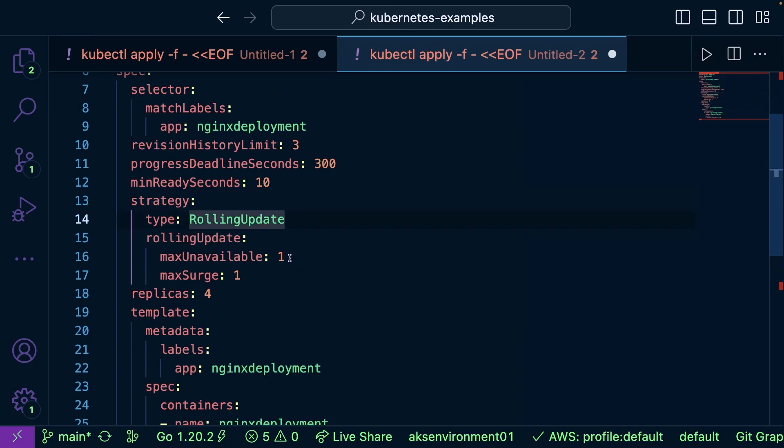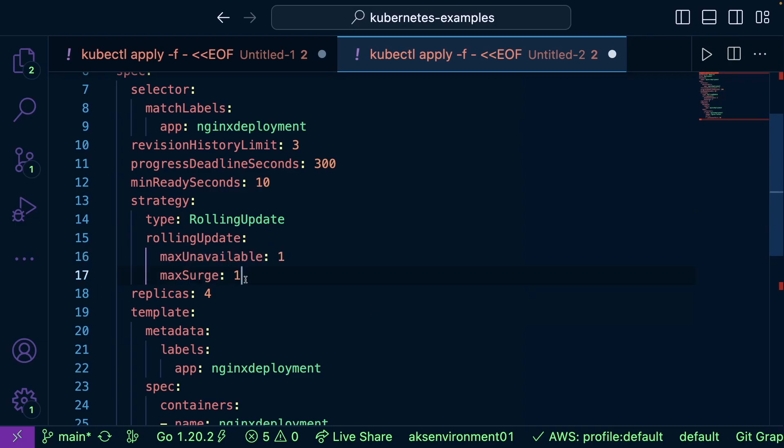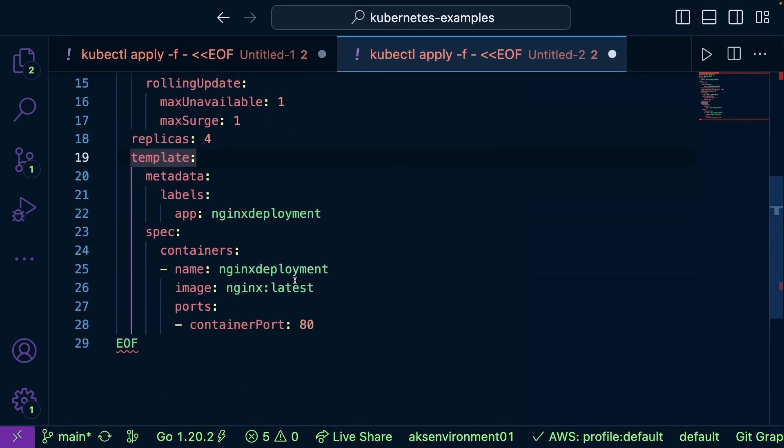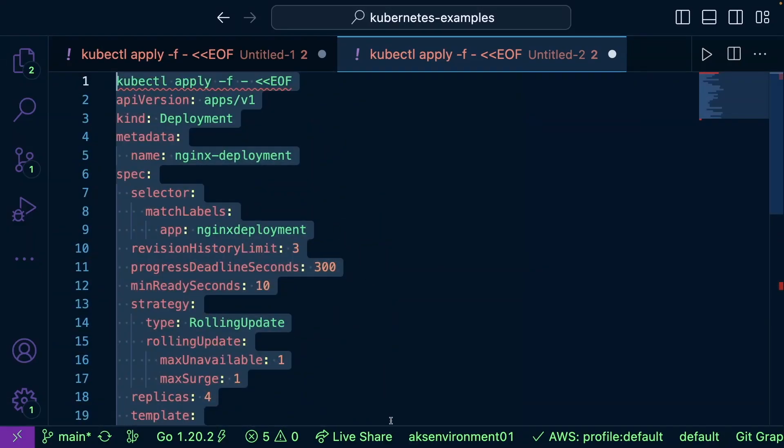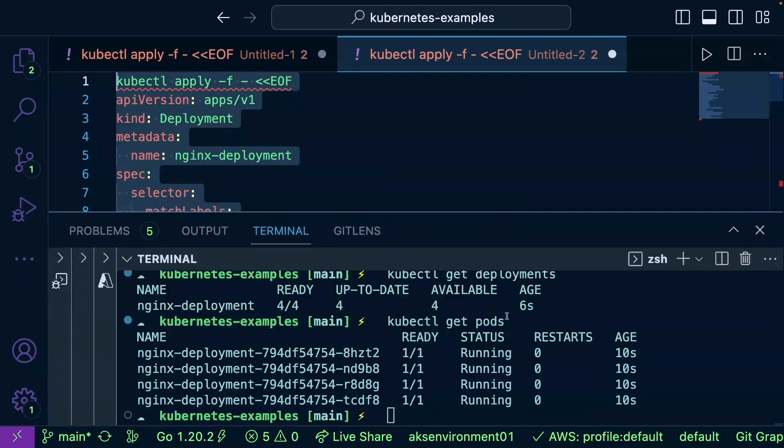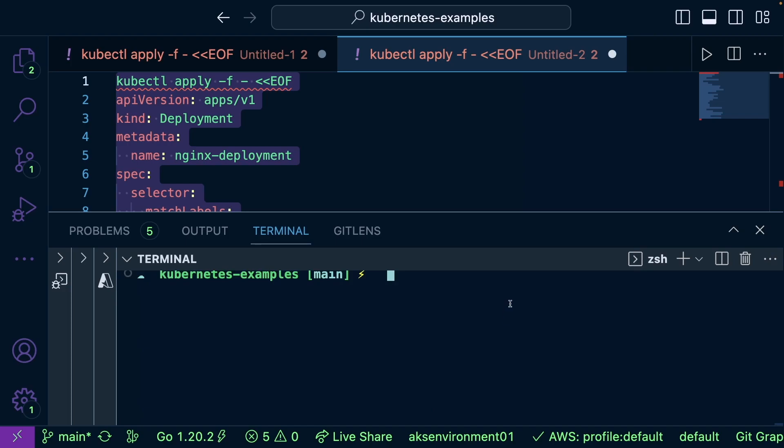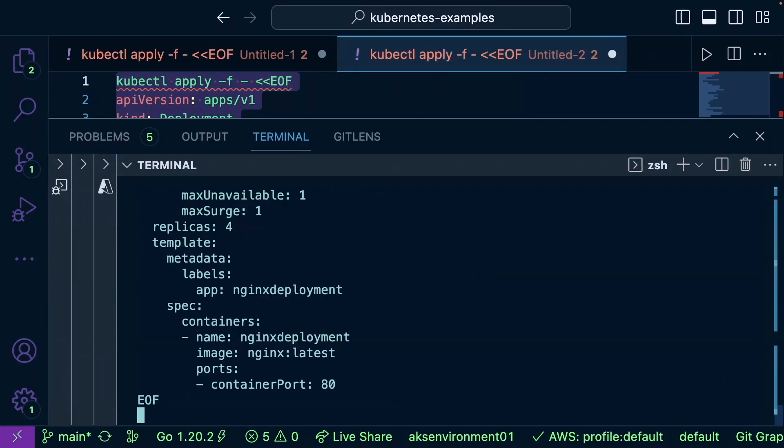We have the rolling update piece here, and it says how many can be unavailable, the max surge, the replica count, and it's also going to showcase the latest container image version for Nginx. Let's go ahead and run this configuration.